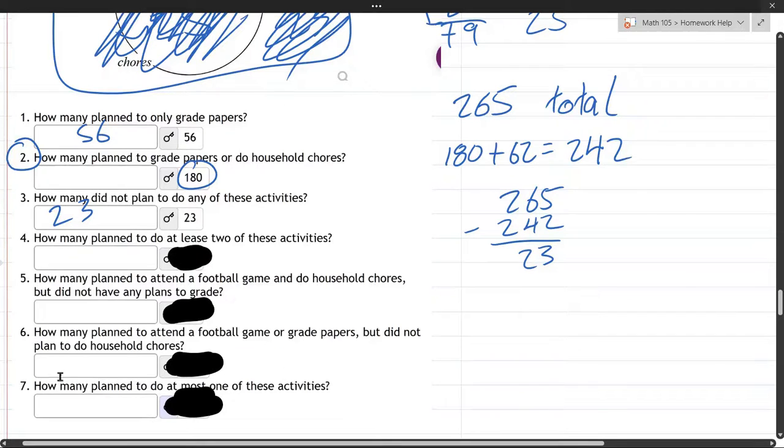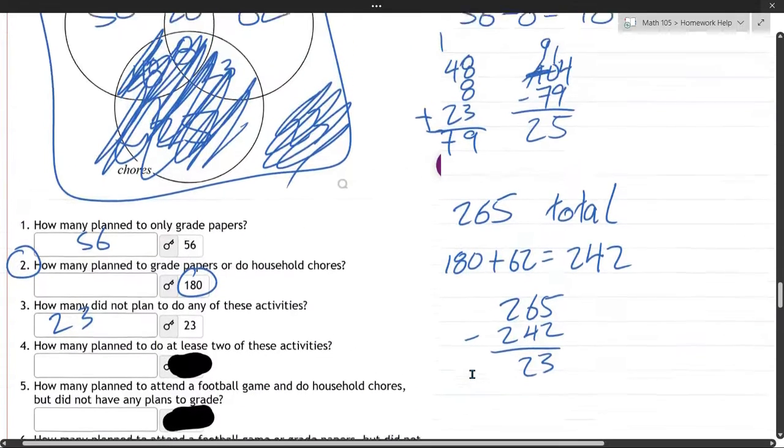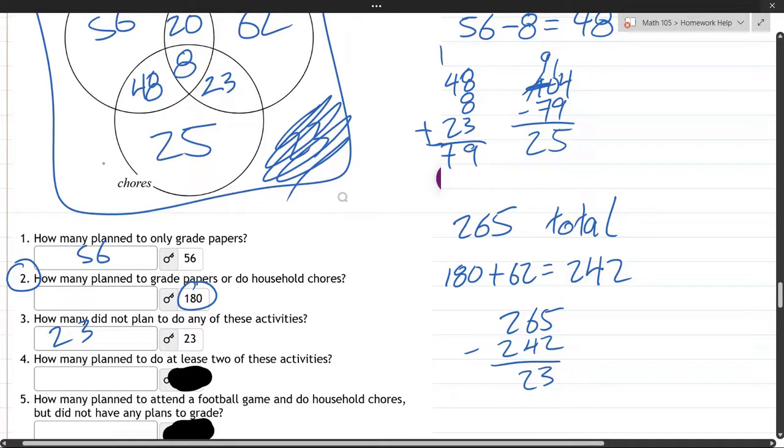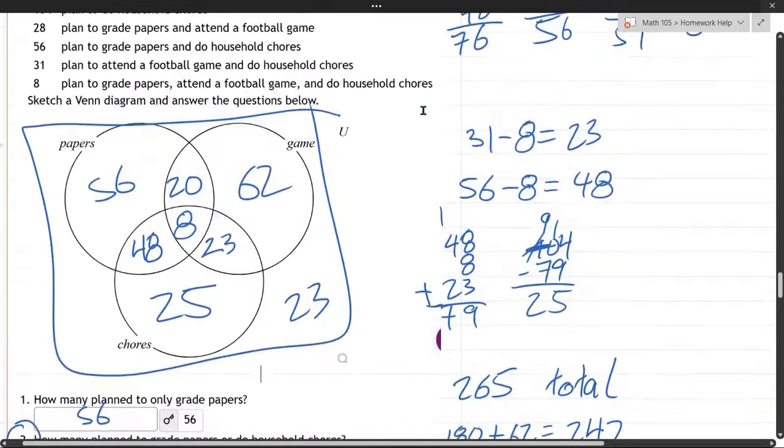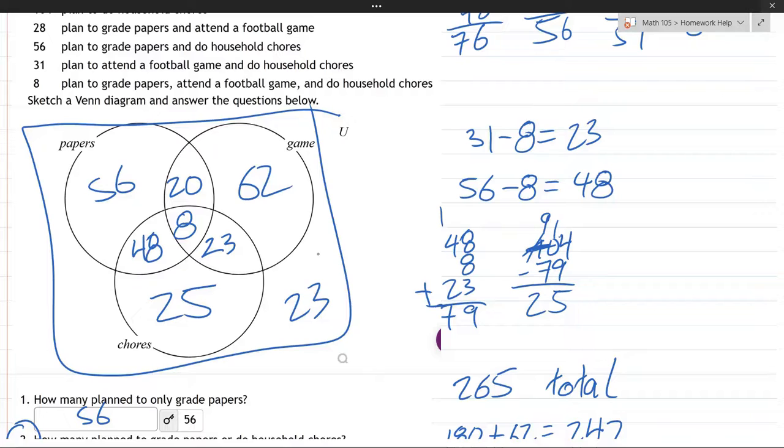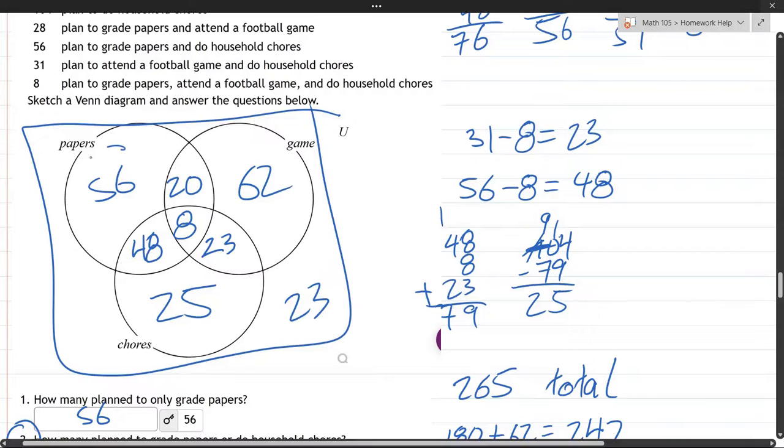Number seven. How many plan to do at most one of the activities? That's a little bit tricky. At most one, we're going to have to... 23. These are okay. They're planning to do zero activities. So, that's... Zero is less than one. So, that's at most one. Or zero. Now, who's doing one activity? One, two, three. So, it's those three groups of people are doing one activity. And this group is doing zero activities. So, those four numbers added together will give you the answer to the last part. So, let's do it. Thank you.